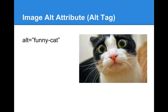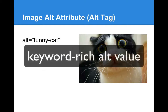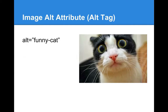It's also referred to as image alt tag, but actually it's an attribute. Once you upload your image and add it to your post, be sure to give it a keyword-rich alt value. That means your alt value should both contain your keyword and describe the image itself — that would be ideal.